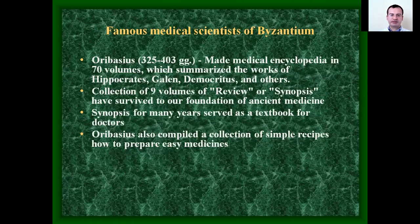Among the famous medical scientists of Byzantium, Oribasius made a medical encyclopedia in 17 volumes, which summarized the work of Hippocrates, Galen, Democritus, and others. A collection of nine volumes — a synopsis — survived as the foundation of ancient medicine, serving as a textbook for doctors for many years. Oribasius also compiled a collection of simple recipes on how to prepare easy medicines.